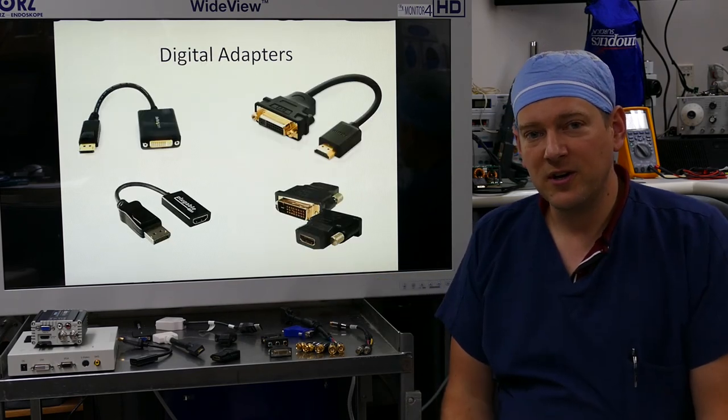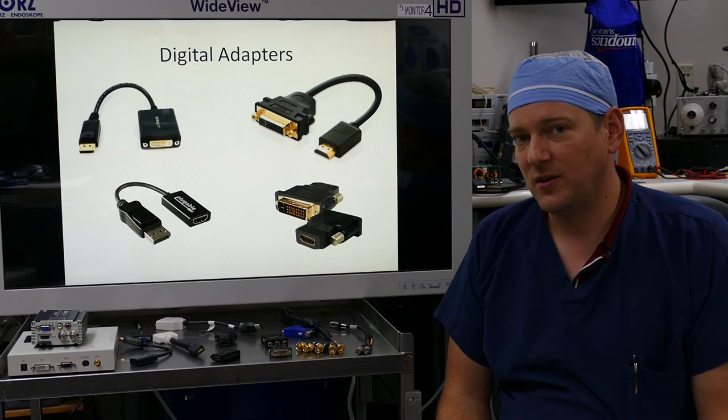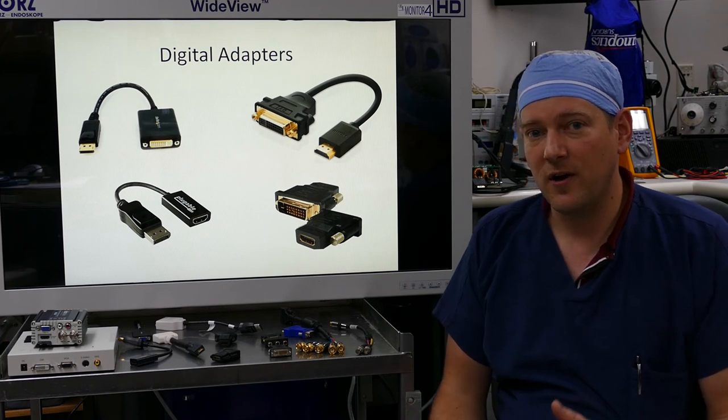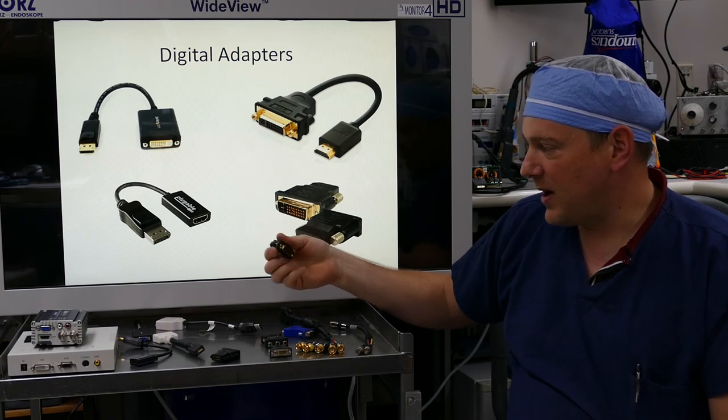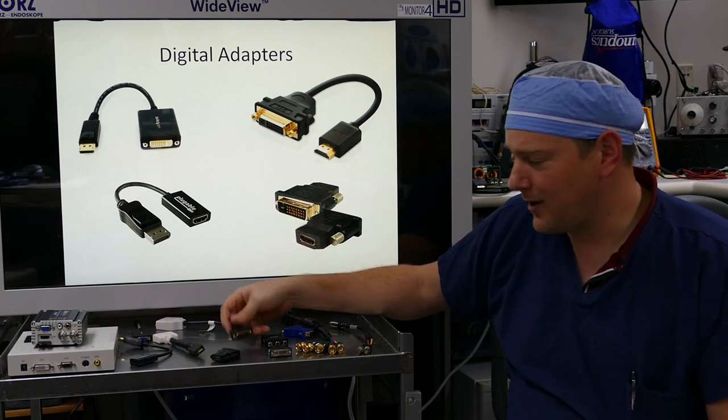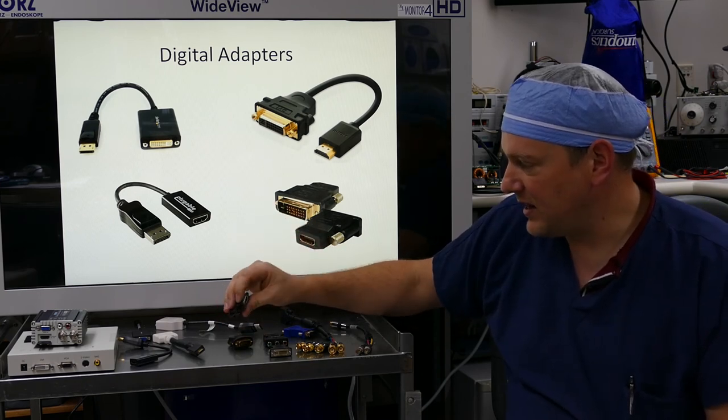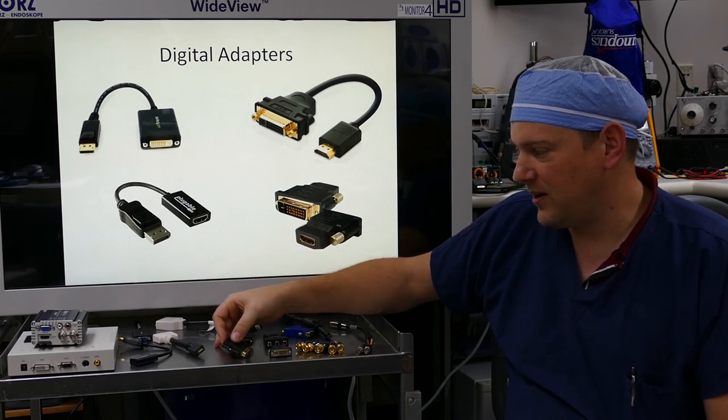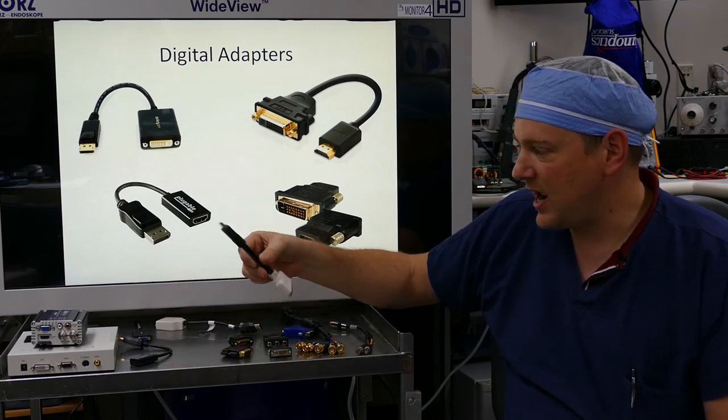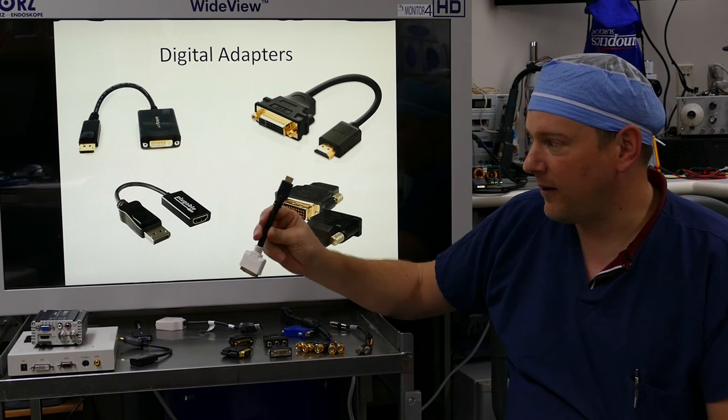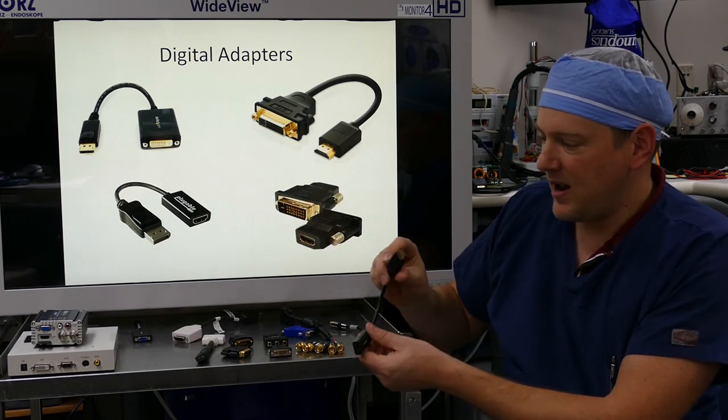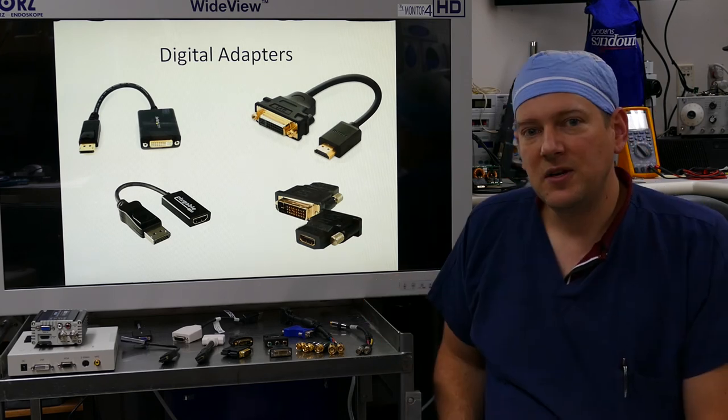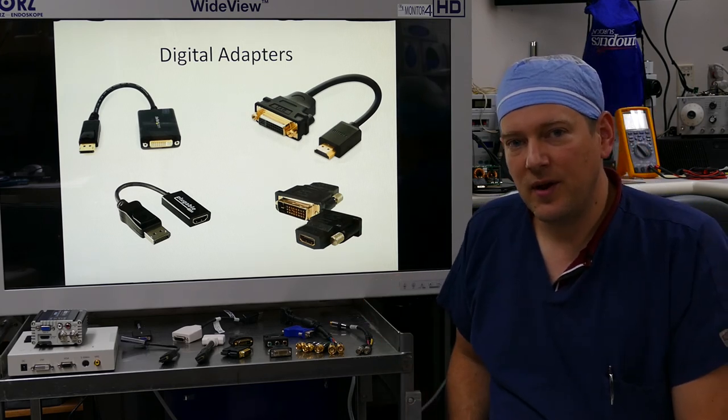For digital video, there's numerous ways of converting one video signal to the other. It usually only involves a dongle or a cable. Over here I have HDMI to DVI-D dual link. I have an HDMI to DVI-D different format so it can fit in a tighter space. I have an HDMI to DVI female dongle, a DisplayPort to DVI, and I have a DisplayPort to HDMI. Digital adapters are usually cheap and readily available.